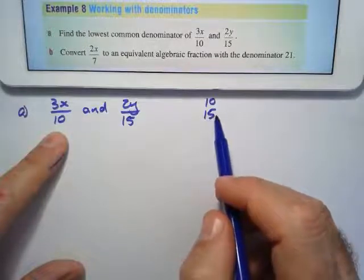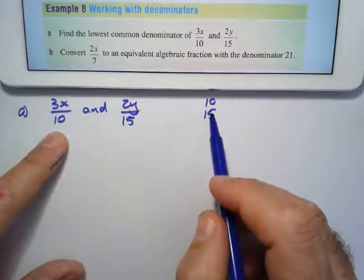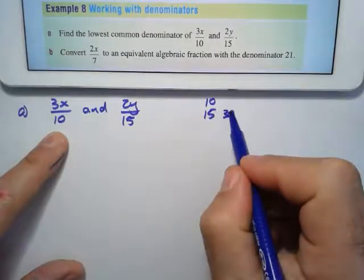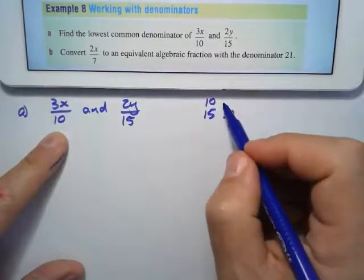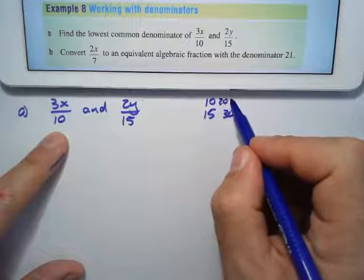So 15, 10 doesn't go into 15. So 15 times 2 is 30. 10 can go into 30 because it's 10, 20, 30.